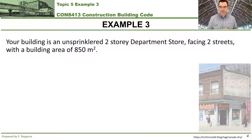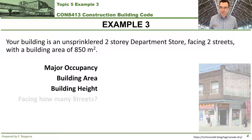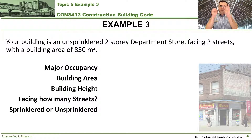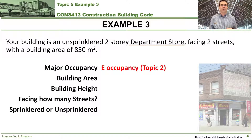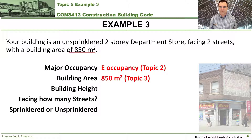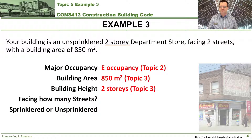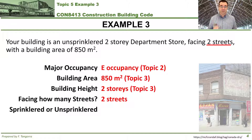Let me rearrange the important information to use the rest of the screen to solve this question. We're going to use the same five building characteristics previously identified and pluck out the information from this example. What is the major occupancy? Because it's a department store, our knowledge from Topic 2 tells us it's an E occupancy — Appendix A is your friend. Building area: 850 square meters. Building height, as we learned in Topic 3, is the number of stories — in this case, two stories. How many streets is it facing? Two streets. And is this building sprinklered or unsprinklered? It's unsprinklered, meaning there are no sprinklers in this building.